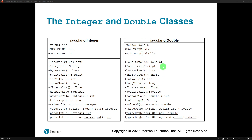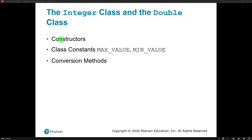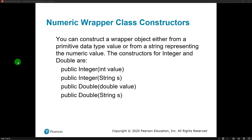These wrapper classes were designed so that we can work with our built-in types like they were objects. The Integer and Double classes both have constructors, class constants called MAX_VALUE and MIN_VALUE, and conversion methods built in. Integer's constructor can take an int or a String; Double's constructor can take a double or a String.